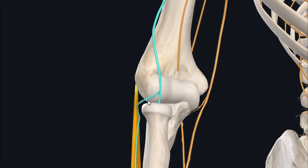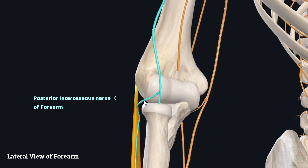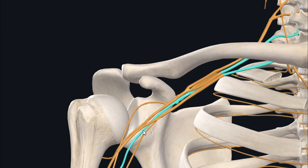Here you are seeing a lateral view of the forearm. This nerve is the posterior interosseous nerve of the forearm, which arises as a deep branch from the radial nerve. The radial nerve itself arises from the posterior cord of the brachial plexus.